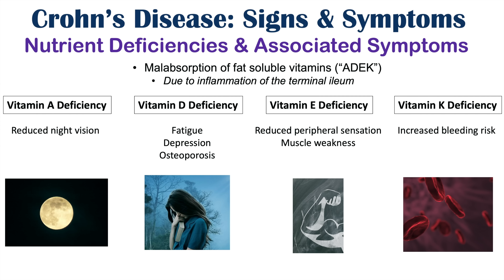Crohn's disease patients may have deficiencies in some or all of these fat-soluble vitamins, but we might not see all clinical features of each deficiency. For instance, vitamin E deficiency might not necessarily present with its classic signs and symptoms in Crohn's disease. And with vitamin K deficiency causing increased bleeding risk, there is simultaneously an increased clotting risk in Crohn's disease — so opposite issues can occur at the same time.